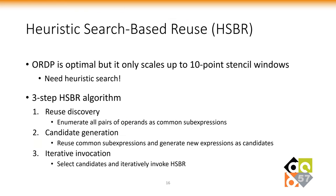An obvious problem with the brute force dynamic programming approach is scalability — it is super-exponential. We propose a heuristic algorithm based on beam search, called HSBR, which is composed of three steps. The reuse discovery step enumerates pairs of operands as candidate common sub-expressions. The candidate generation step reuses common sub-expressions and generates new expressions as candidates. The iterative invocation step selects good candidates and iteratively invokes HSBR.